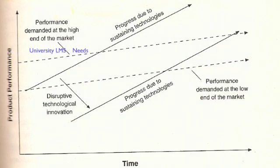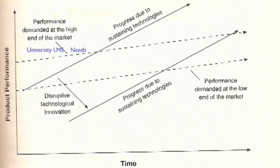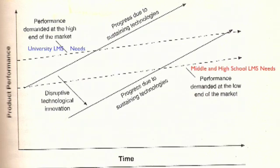So for this example, let's say that the high end market is the university market. A lower end market is the middle and high school. One could argue that they need a product with fewer features at a lower price and probably will have lower margins than the university market.